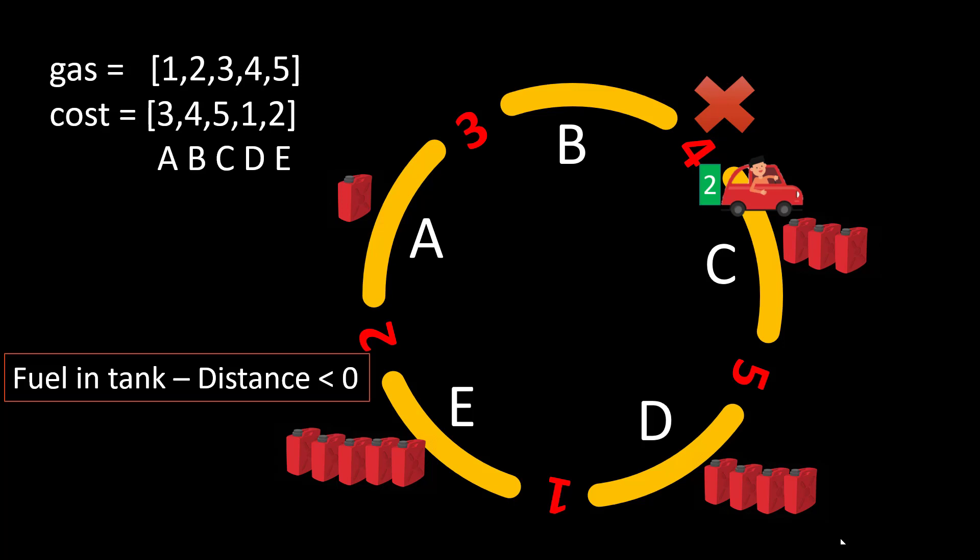This also reveals one more concept: if the total amount of gas minus the total amount of cost is less than zero — meaning the sum of cost is greater than sum of gas — there is no way we can cover the whole circuit, because at some point we will run into a condition where we do not have enough fuel to move to the next point. We will discuss that condition thoroughly in the later part of this video.